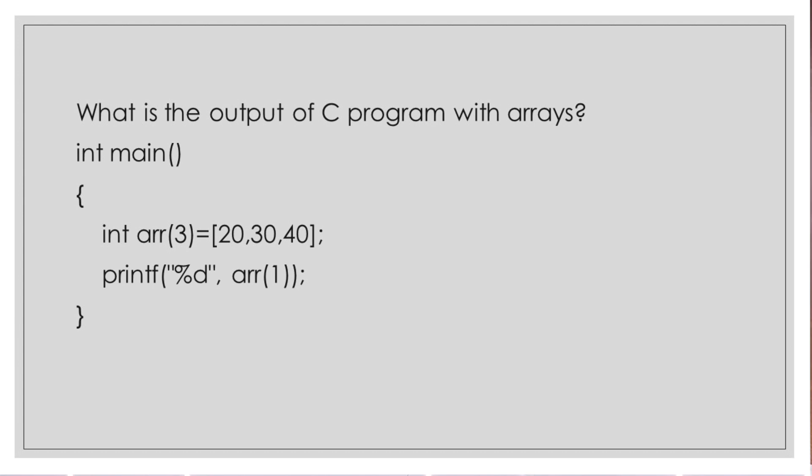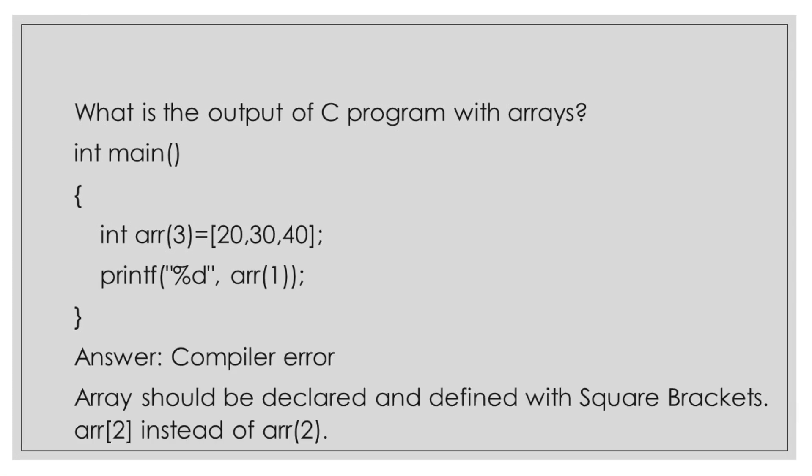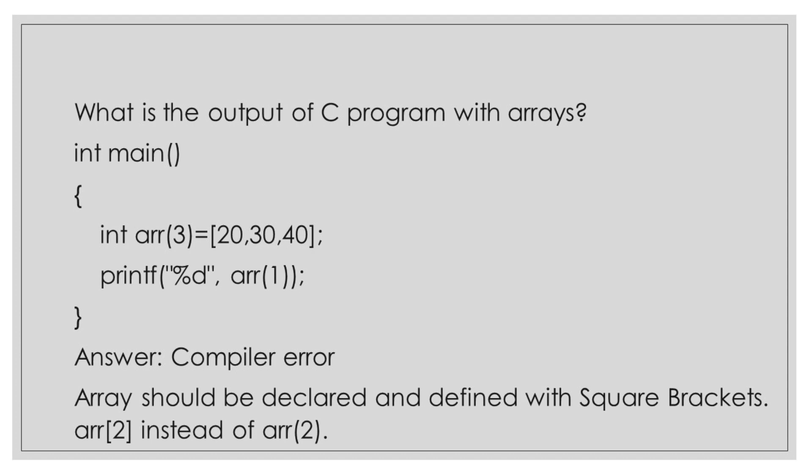Let's take another question. The question is what is the output of C program with arrays? Here we find that we have an array which is defined. Can you guess what will be the output of this program? The values have been declared inside the square bracket and then we are printing the value. Yes you guessed it right, it will show compiler error. Why? Because array should be declared and defined within square brackets. Here we have defined with round brackets. So it's a compiler error.